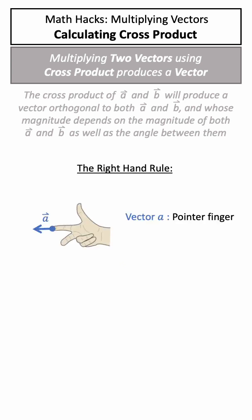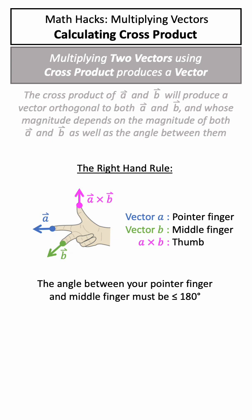Using your right hand and lining up your pointer finger with vector A and your middle finger with vector B, your thumb will now point in the direction of the cross product. Just make sure you're using the smallest angle between vector A and vector B.